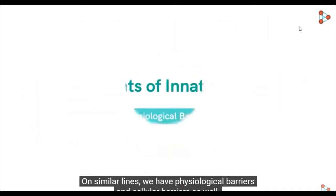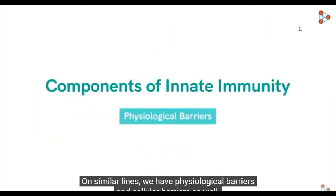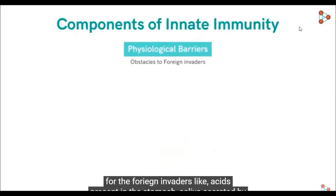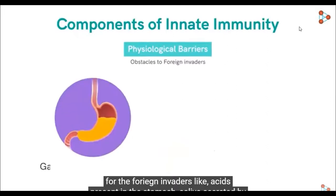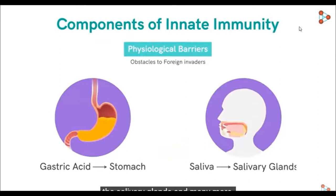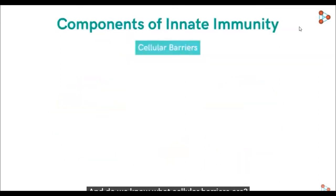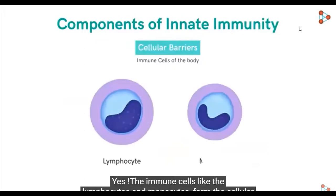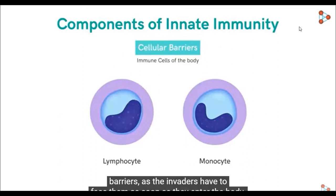On similar lines, we have physiological barriers and cellular barriers as well. The physiological barriers include obstacles like acids present in the stomach and cells present in the blood. And the cellular barriers — the immune cells like the lymphocytes and monocytes — form the cellular barriers, as invaders start to face them as soon as they enter the body.